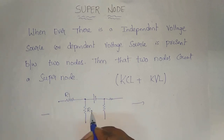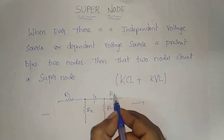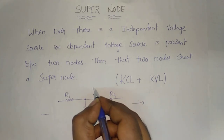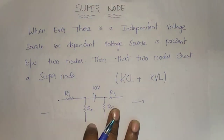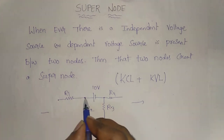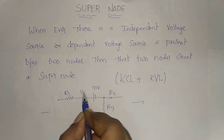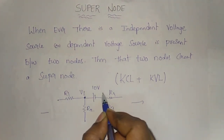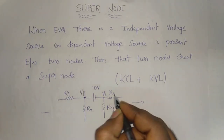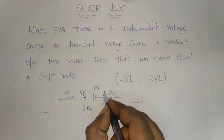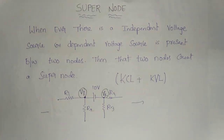R1, R2, R3, R4. For example, this is 10 volts. So now we have node analysis. This is a node, this is a node, this is a node. So this node is V1 and V2. So now we have node analysis.